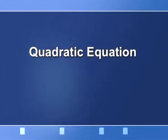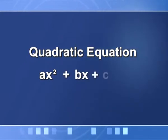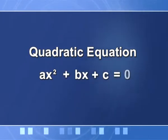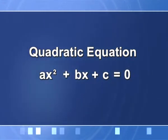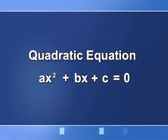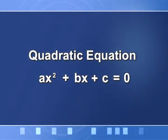A quadratic equation — what do we mean by a quadratic equation? The general example is Ax² + Bx + C = 0. This equation is formed by a polynomial Ax² + Bx + C, which is a second-degree polynomial.